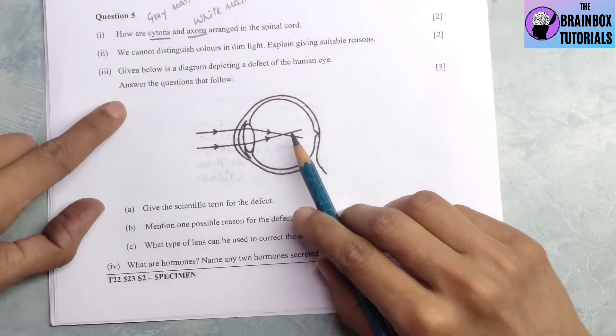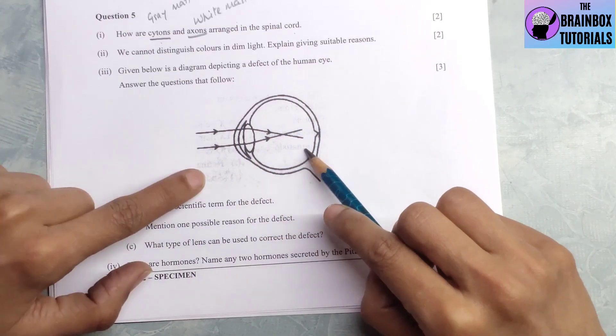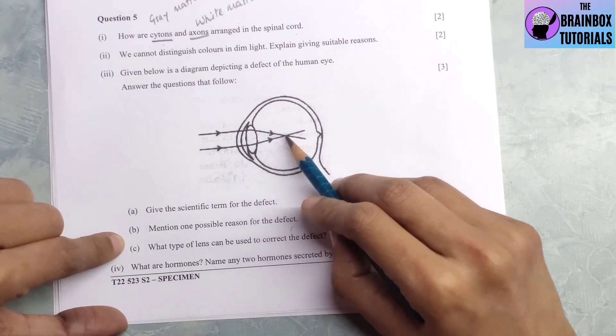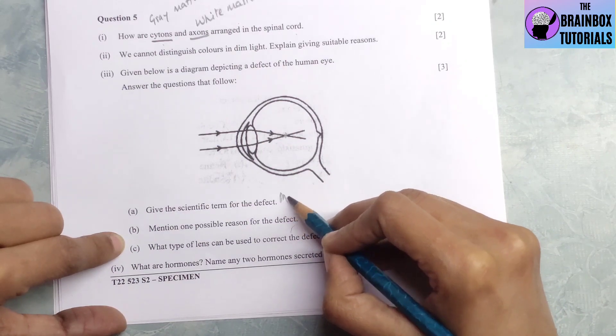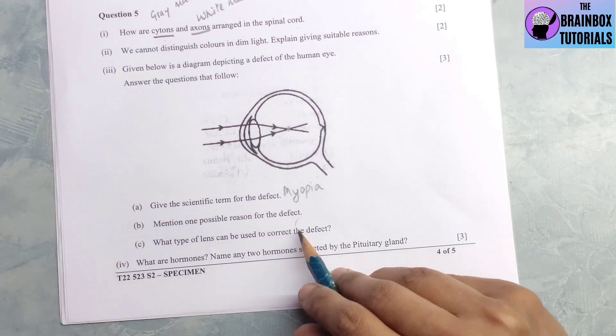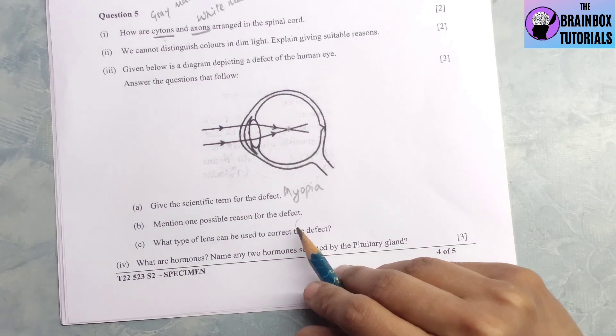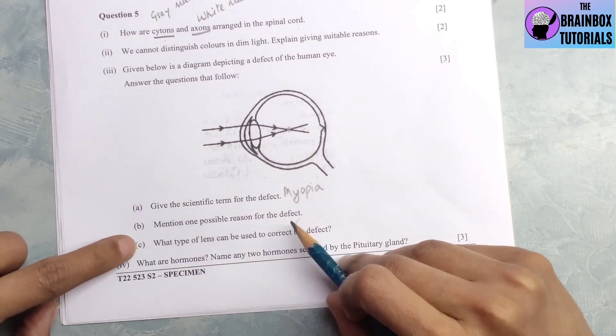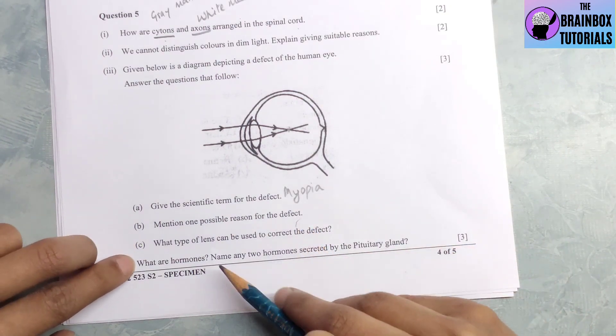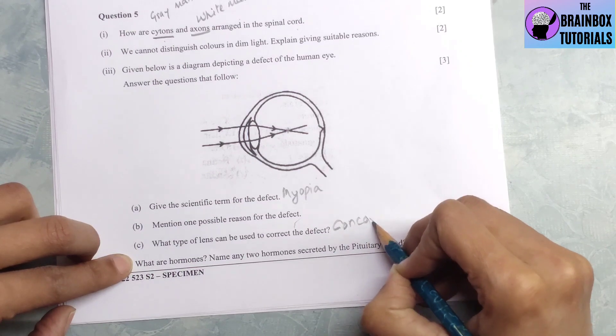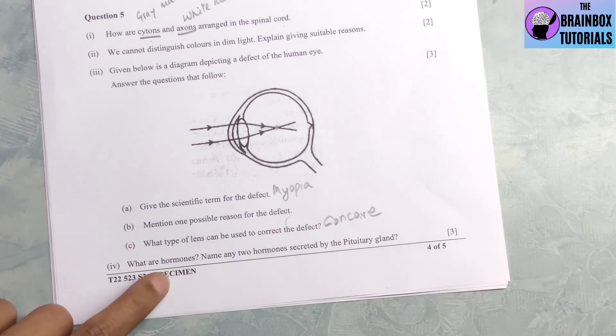Number 3, given below is a diagram depicting a defect in the human eye. This is the diagram given. Answer the questions. Number A, give the scientific term for the defect. Here the rays are meeting before the retina. That means this is myopia. Number B, mention one possible reason for the defect. Two possible reasons: you can write the eyeball is lengthened from front to back or second, the lens is too curved. You can write any one. Number C, what type of lens can be used to correct the defect? The lens will be concave lens.